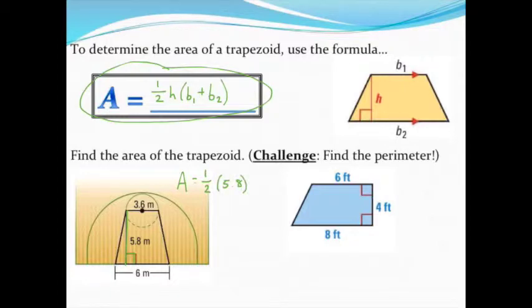Make sure you include parentheses around the sum of the bases, b1 and b2. It doesn't matter which one's which, just make sure you're adding them together: 3.6 plus 6. I would probably simplify the parentheses before reaching for my calculator, so 5.8 times 9.6 once I add those together.